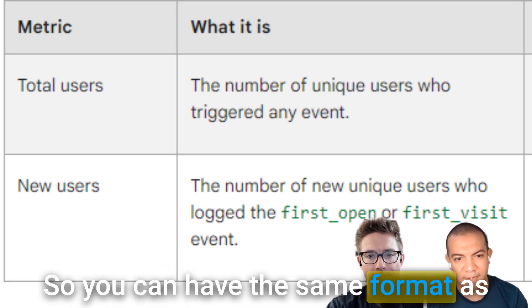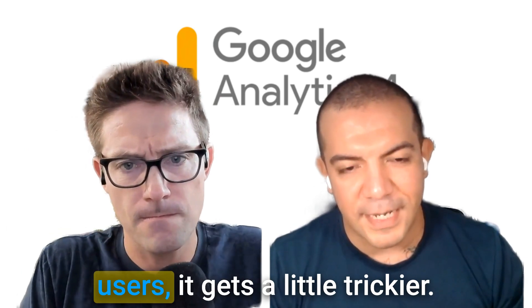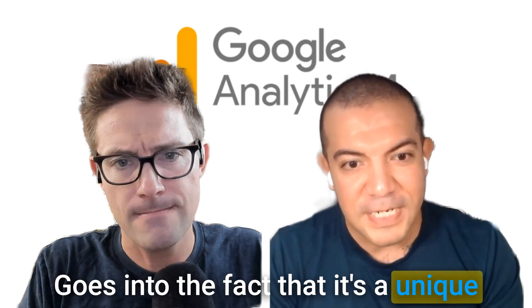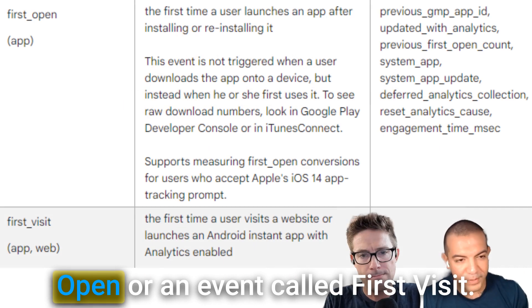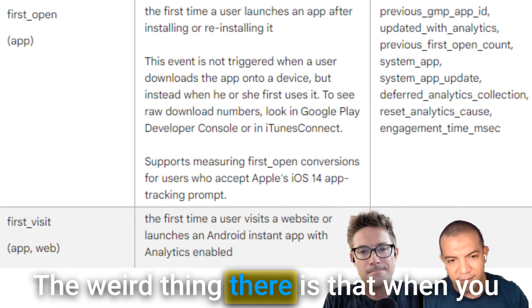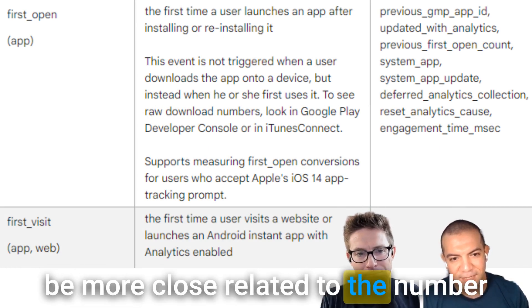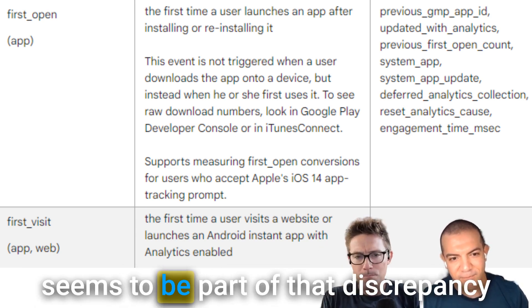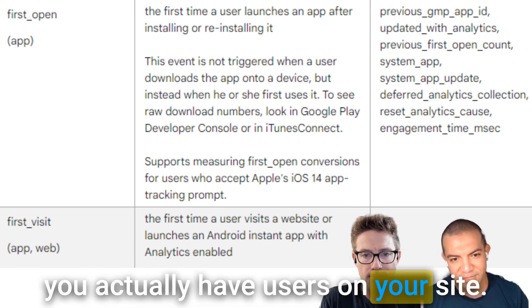You can have the same format as you used to see it in Universal Analytics, but when we talk about new users, it gets a little trickier. It goes into the fact that it's a unique set of those users that have triggered an event called first_open or an event called first_visit. When you look at those two events, they tend to be more closely related to the number of new users when aggregated than the actual number of users, which seems to be part of that discrepancy of seeing more new users than you actually have users on your site.